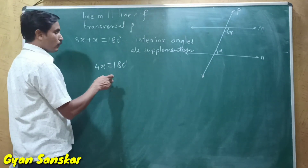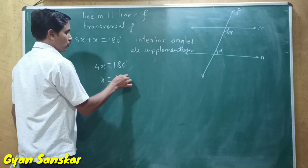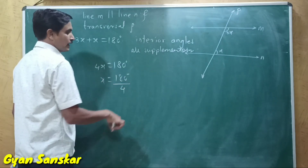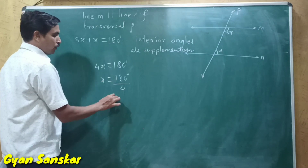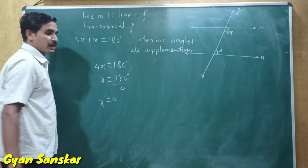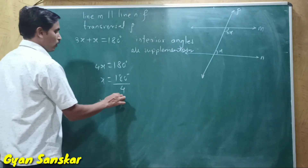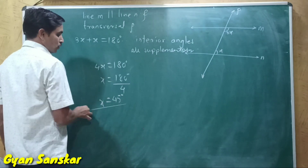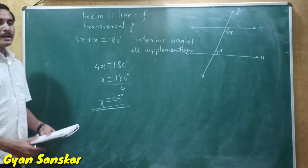If 4 goes to the right side, it will divide 180. So x is equal to 180 degrees divided by 4, which gives x is equal to 45. So this is the answer of x.